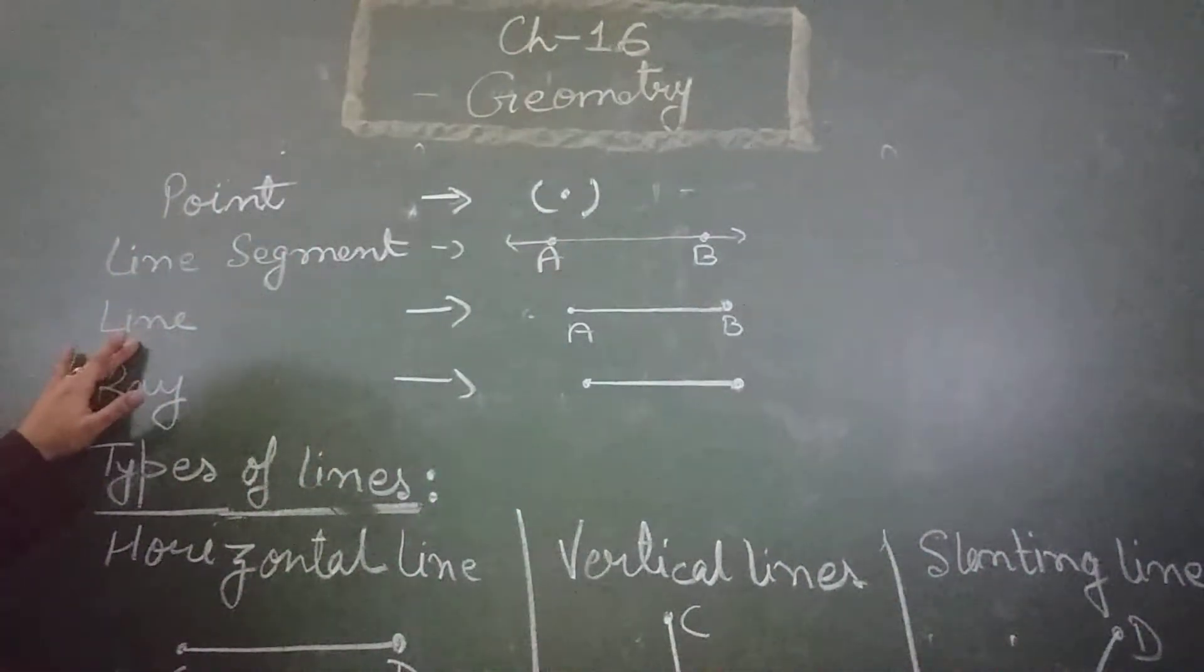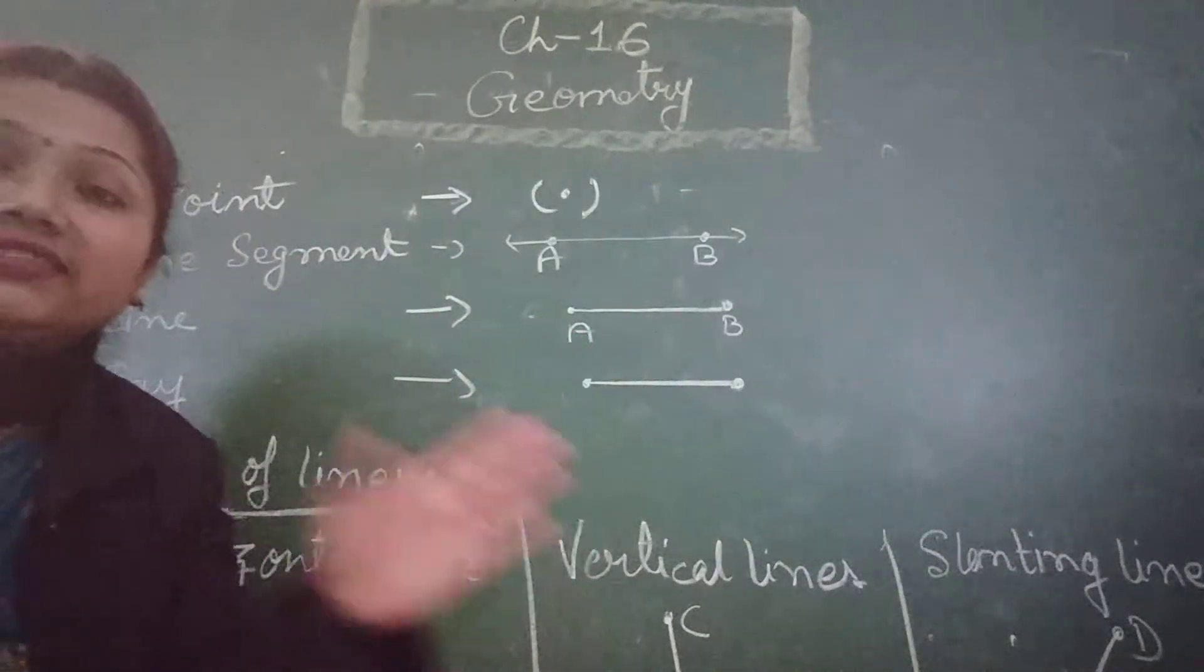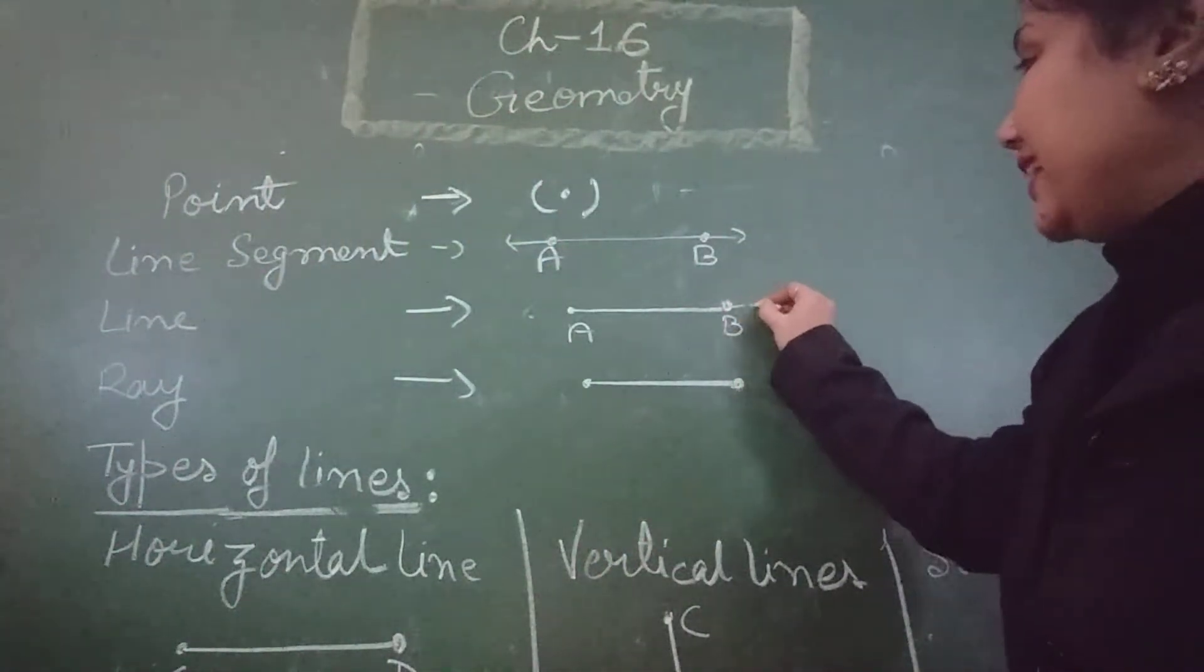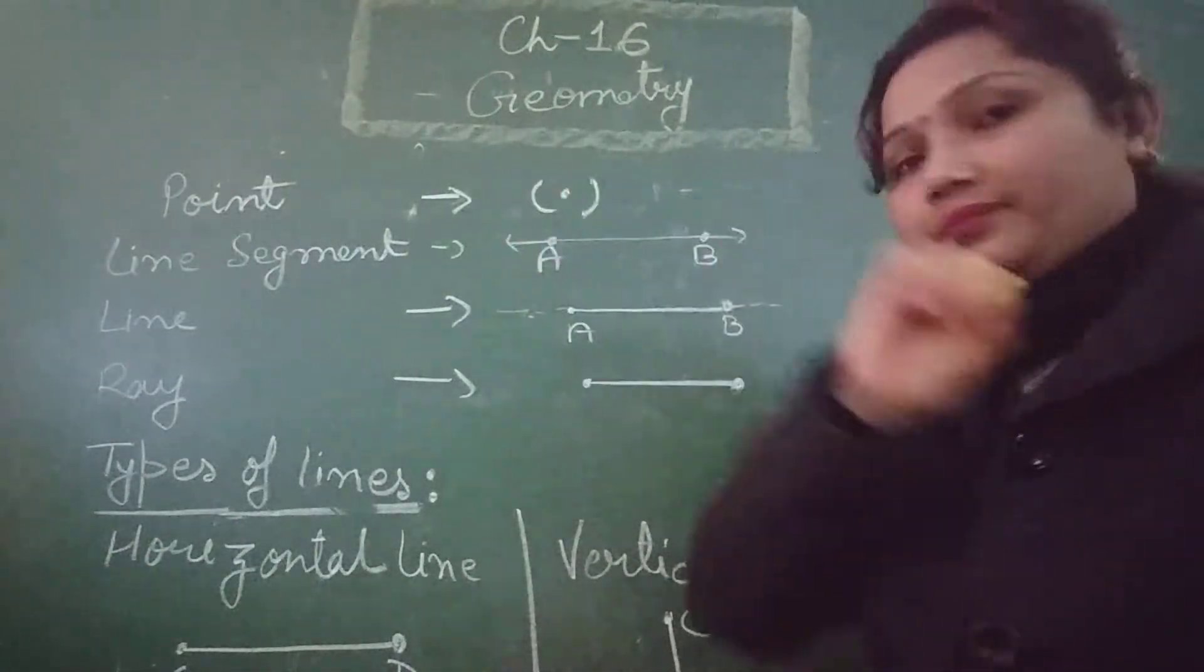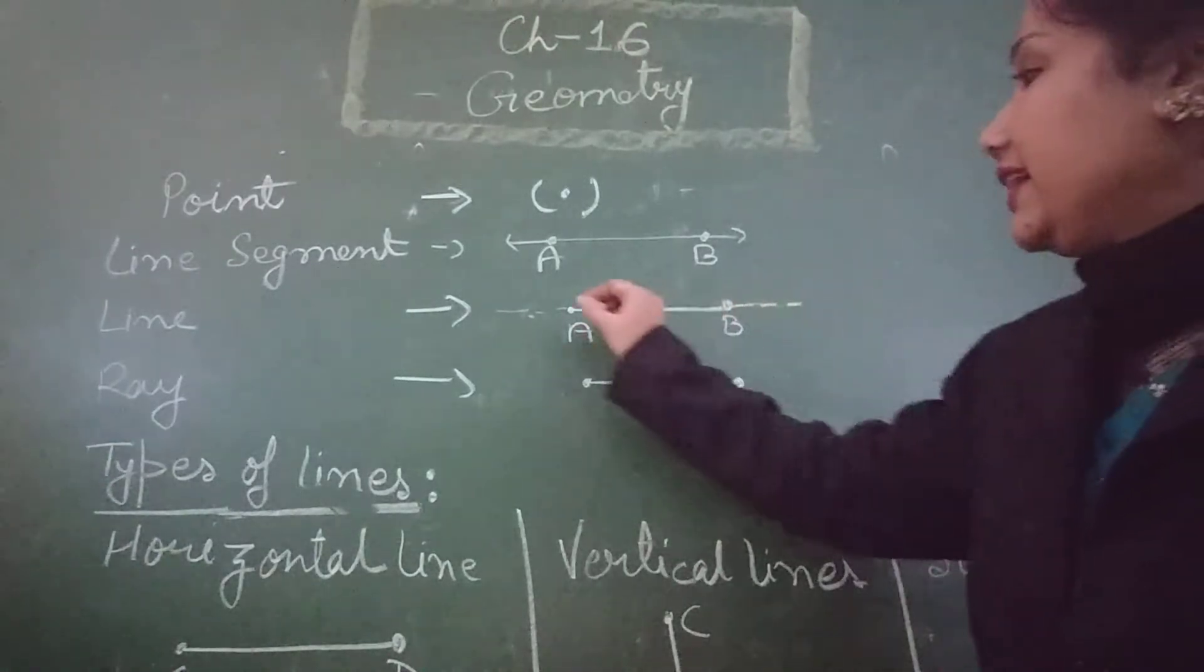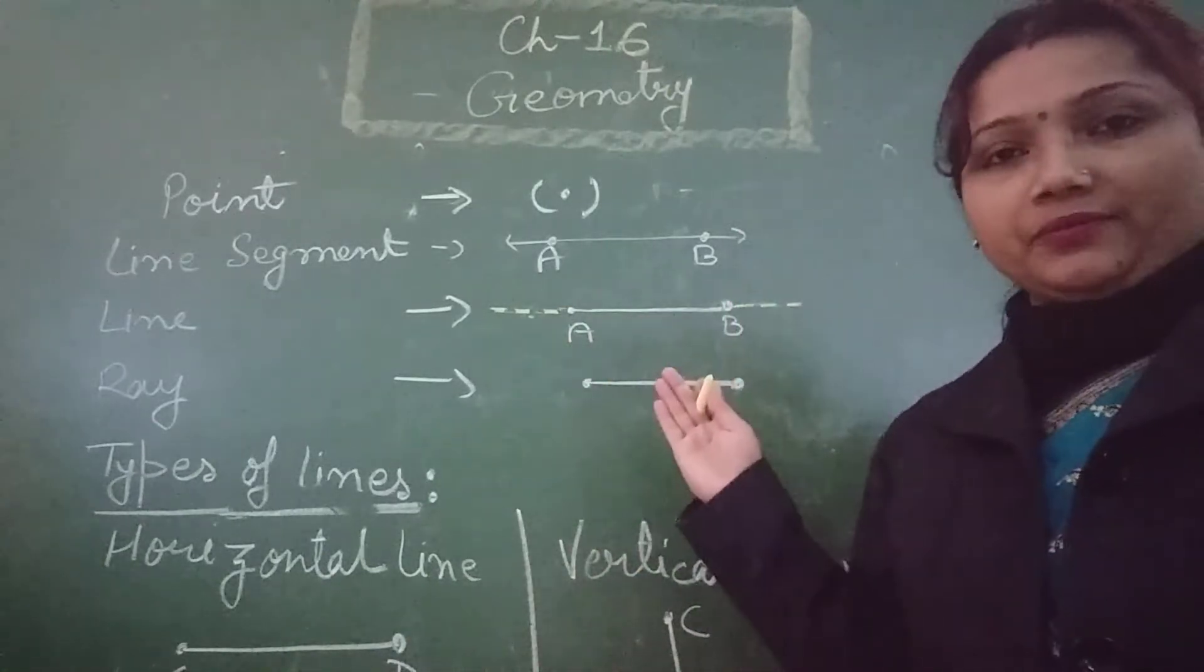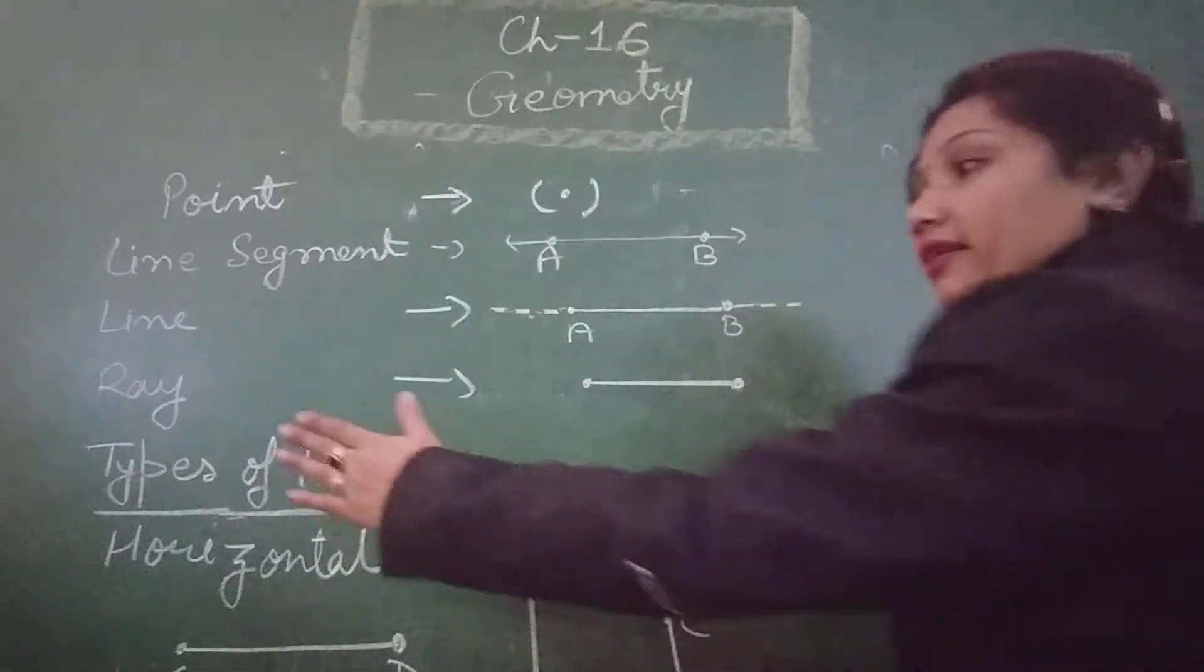Next, line. Line has no end point. It can be extended from two end points. It cannot be drawn on a plain paper. Line has no end point. It moves infinitely from both sides.